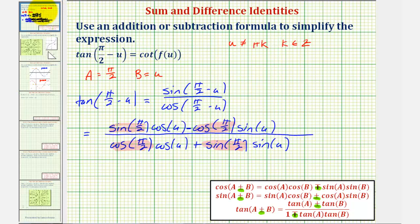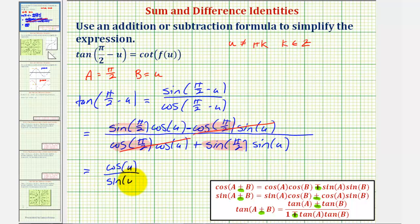Going back to our work, since cosine of pi over two equals zero, those products become zero. Since sine of pi over two equals one, the numerator simplifies to one times cosine u, which is cosine u, and the denominator simplifies to sine u. Using the quotient identity, cosine u divided by sine u equals cotangent u. Therefore, tangent of the quantity pi over two minus u simplifies to cotangent u, as long as u is not a multiple of pi radians. For the homework question, since we have cotangent u, f of u would just be equal to u.